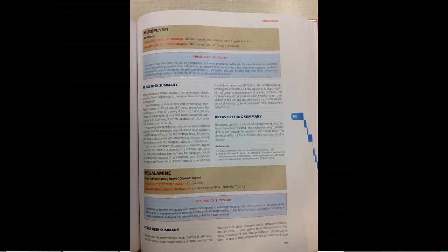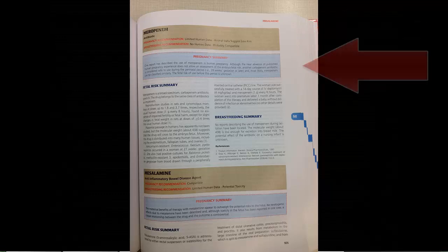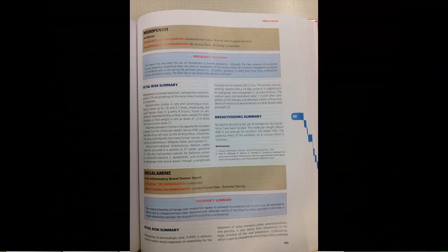The monographs themselves within this book are straightforward and organized alphabetically by generic name. Let's look at meropenem. As you can see with this monograph, it gives you the pregnancy and breastfeeding recommendations in the brown bar, a pregnancy summary in the blue bar, and then it splits into fetal risk summary and breastfeeding summary.